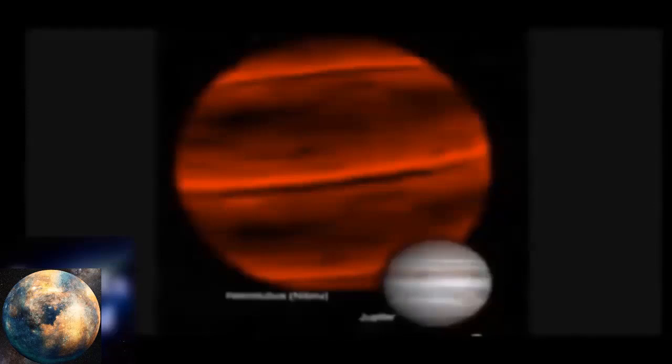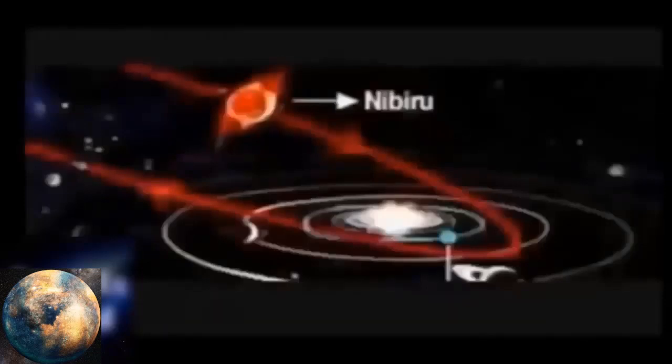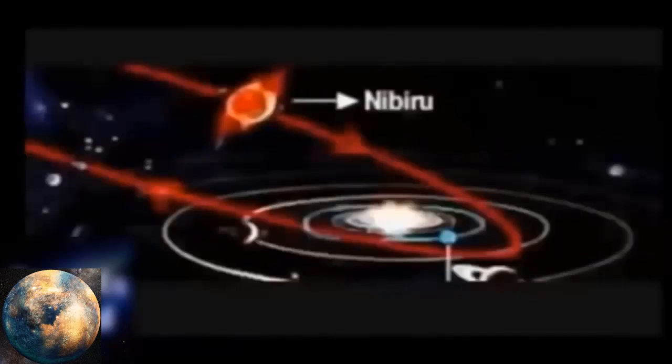They're never going to admit that global warming and climate change were a lie because can you imagine the lawsuits? Planet X is roiling the magma, so the magma is circulating closer to the bottom of the crust. The seafloors are warming, and the ice is melting from underneath. But the Arctic just had one of the coldest winters in years. Antarctica has been gaining ice. This whole global warming thing, they're never going to use that phrase again.